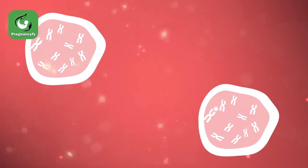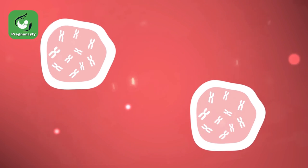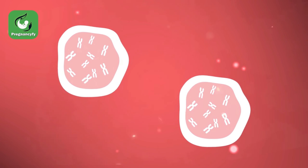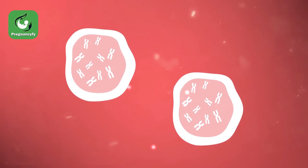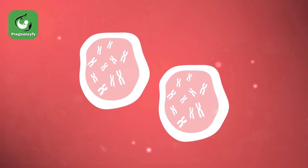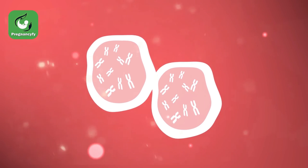When this happens, the sperm's nucleus will merge with the egg's nucleus, forming a zygote, which will grow as a baby over the next 9 months.